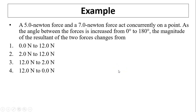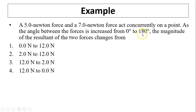Another example: a 5-newton force and a 7-newton force act concurrently on a point. As the angle between the forces is increased from 0 degrees to 180 degrees, the magnitude of the resultant will change from what to what? At 0 degrees you have a maximum force of 12. At 180 degrees the minimum is the difference: 7 minus 5 is 2. So the answer is it changes from 12 to 2.